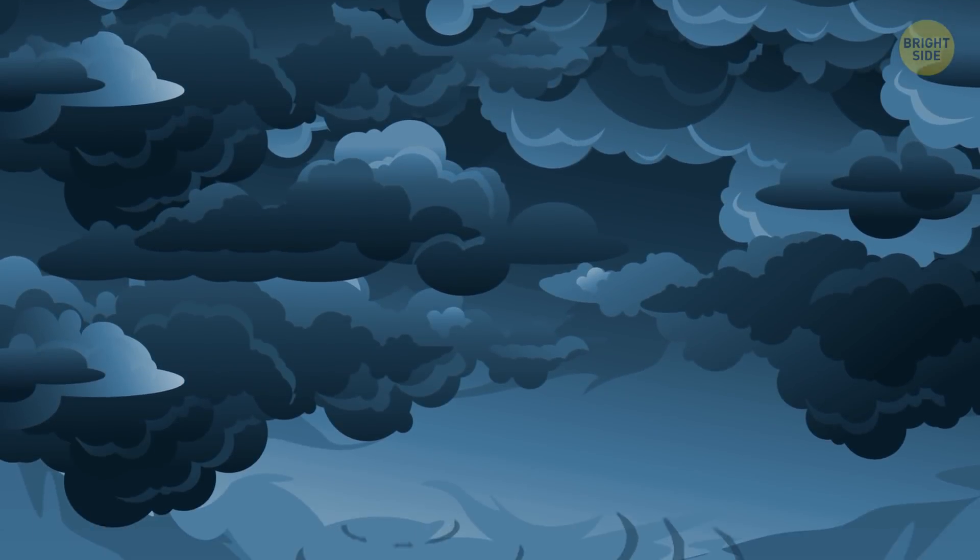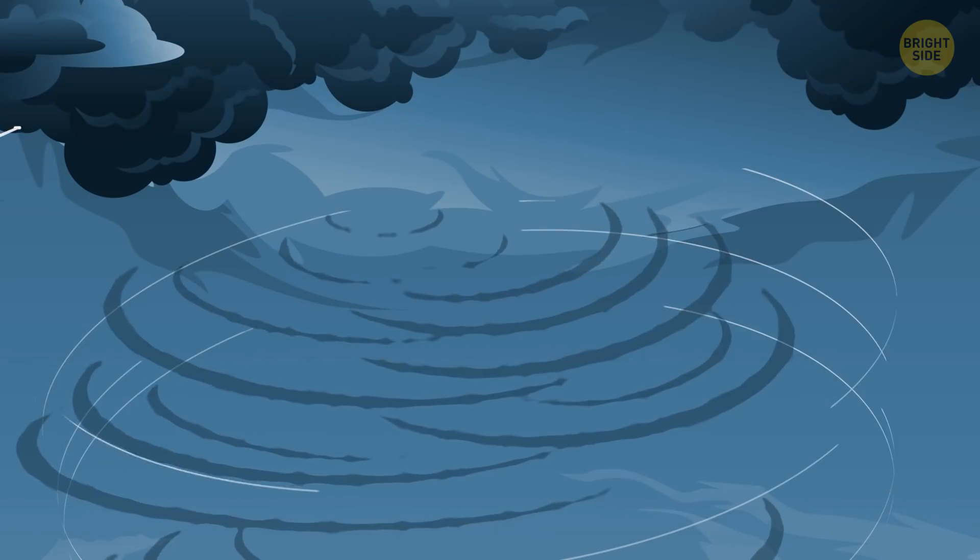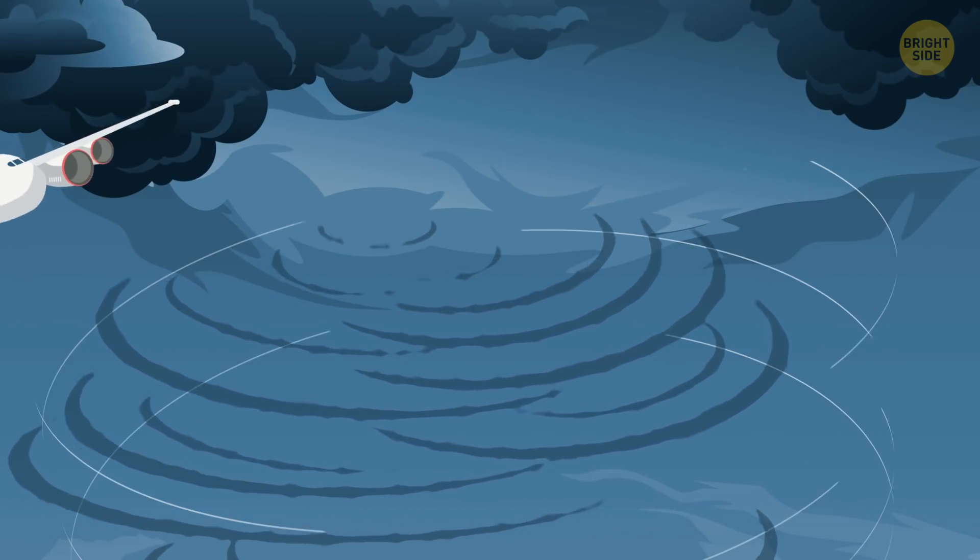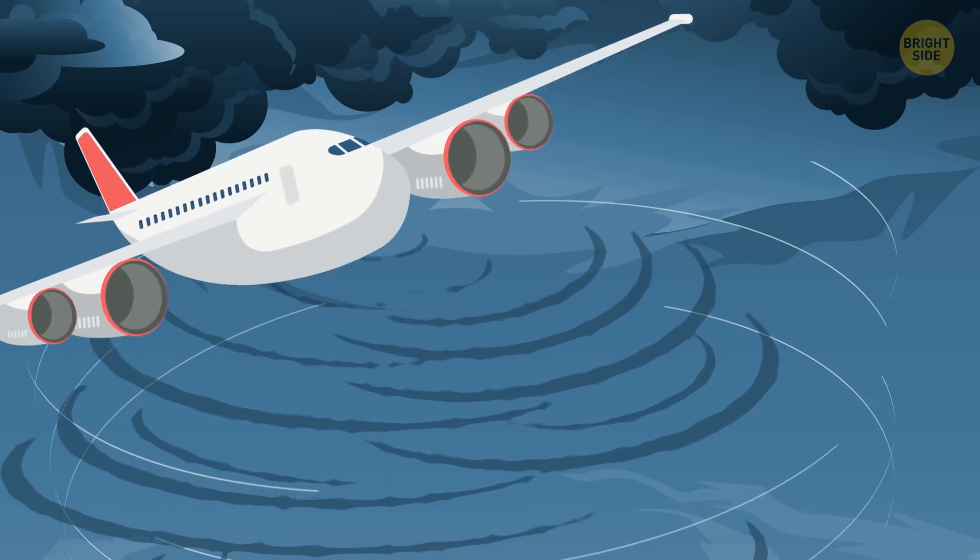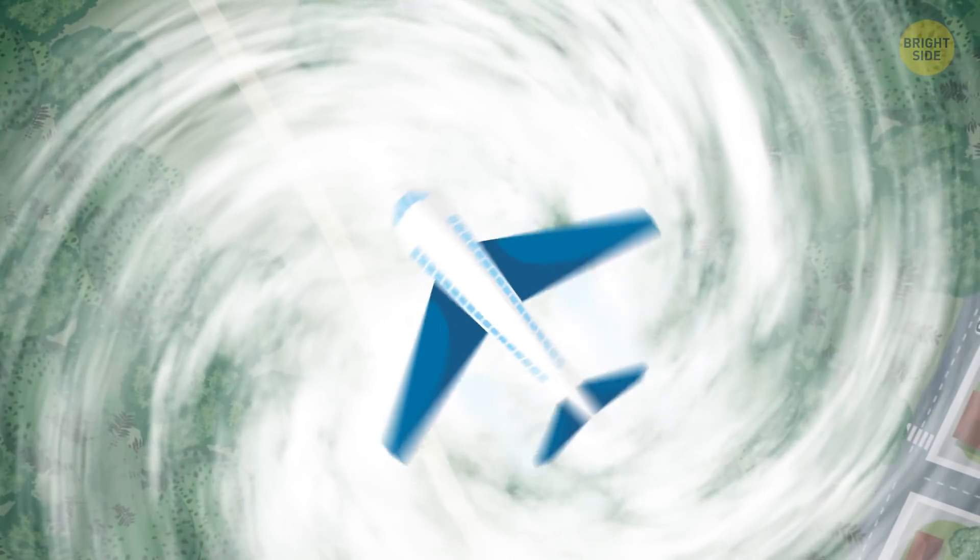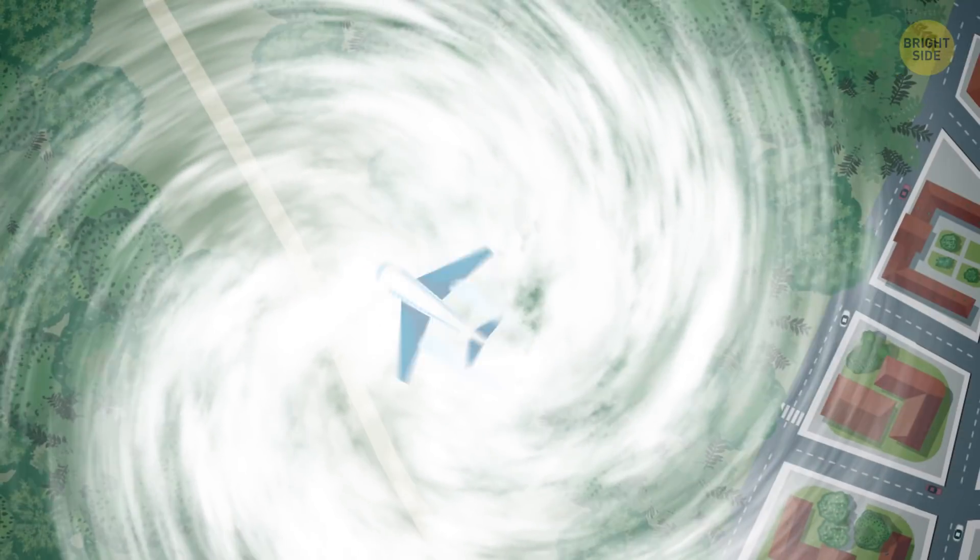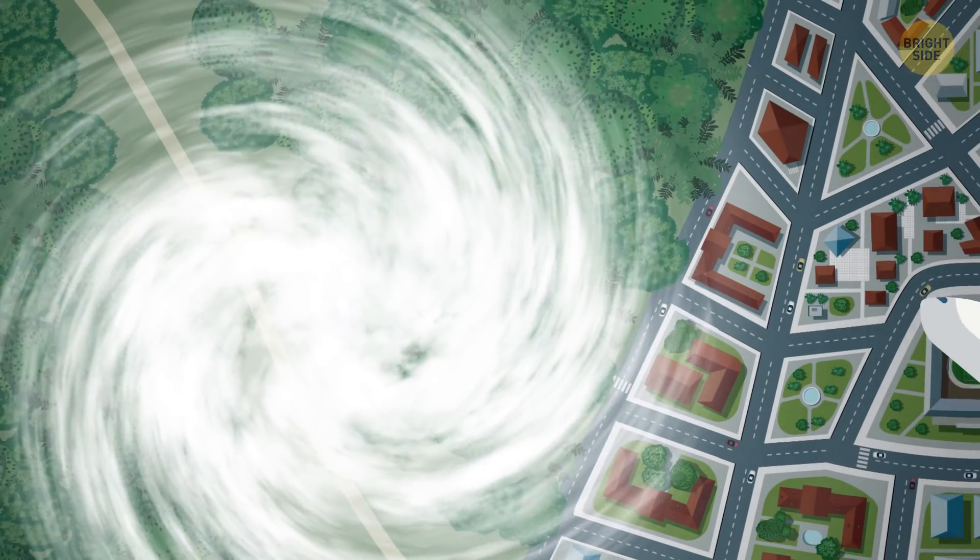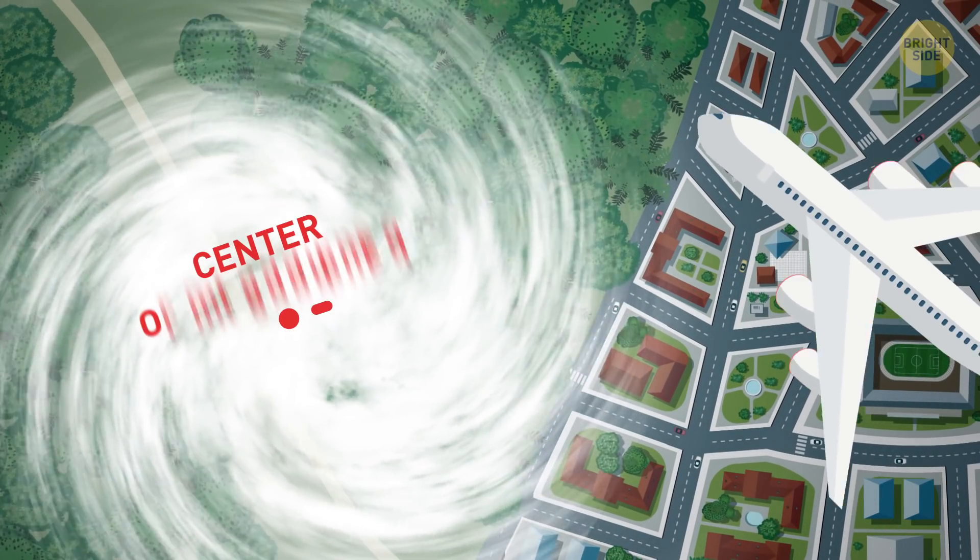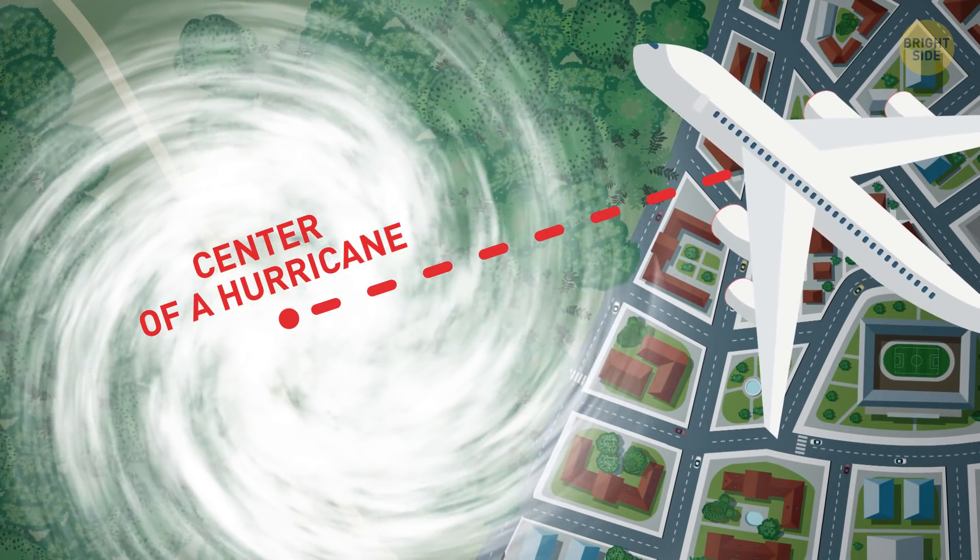The thing is that most hurricanes form at a much lower altitude than thunderstorms. As a result, a plane can easily fly over parts of a hurricane. Naturally, no commercial airliner will ever fly through the eyewall of a hurricane, where the weather is the most severe and the winds are the most forceful. But flying further away from the center of a hurricane presents no danger to planes.